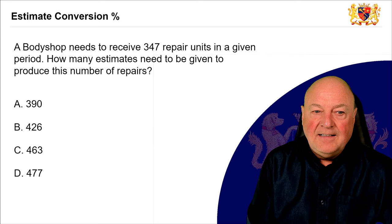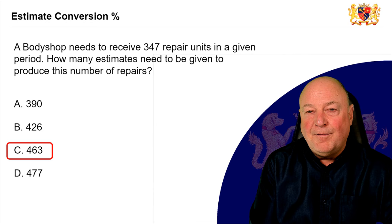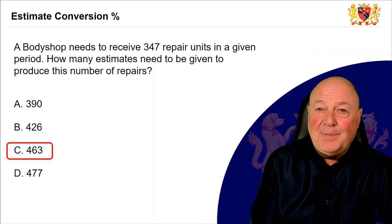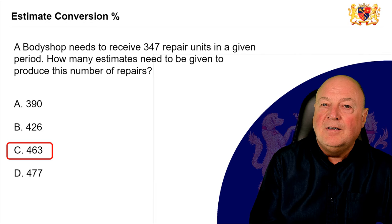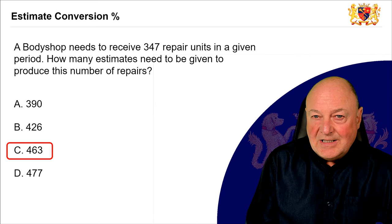Going back to the LinkedIn question, the answer is C — 463. If you got it right, congratulations. If you didn't, you might want to consider which formula you used to get to your answer. For budgeting and business planning this is really crucial information, getting you to question the root cause of your performance — where are you winning, where are you losing.